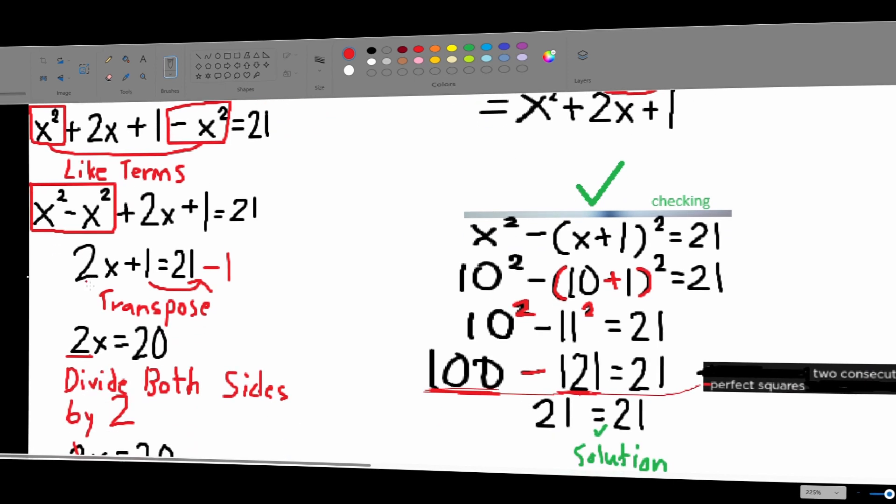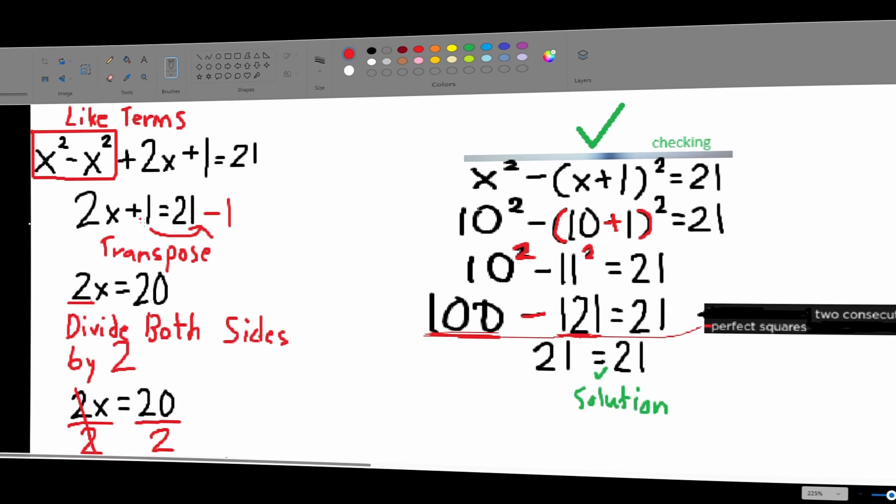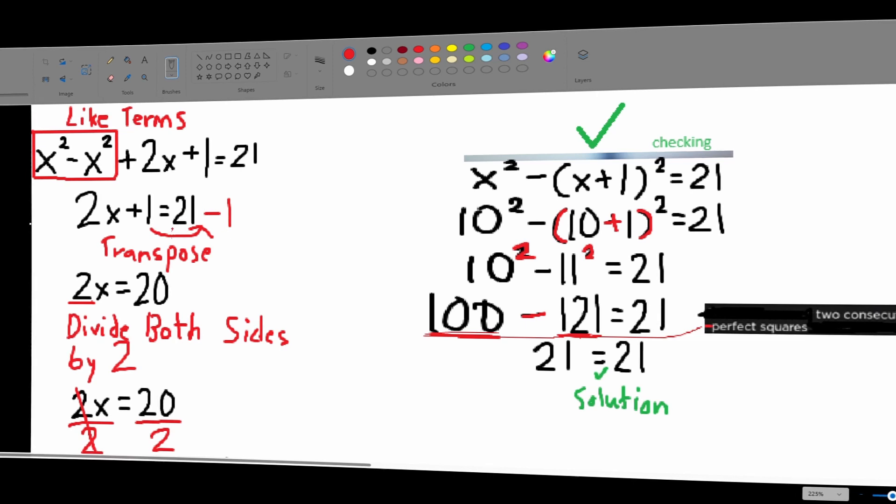And now we're left with 2x plus 1 equals 21. So first off, let's transpose this to here. So, now we end up with 2x equals 20. Transposing is just taking a number and flipping its sign and then subtracting or adding it here.